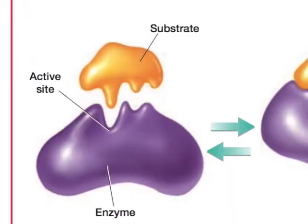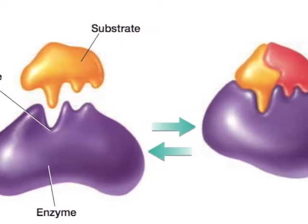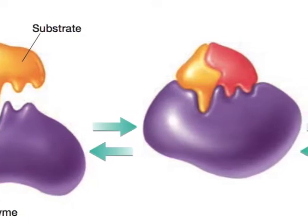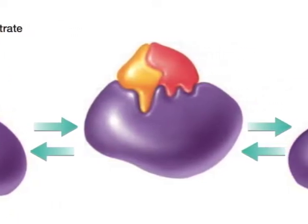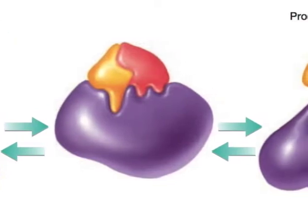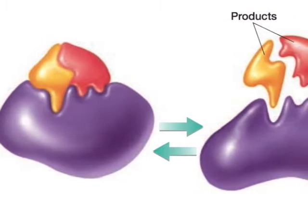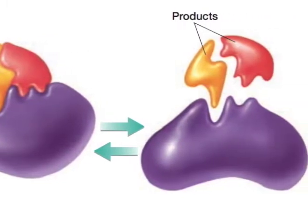This figure demonstrates the lock and key model of enzymes. As you can see, the substrate fits perfectly into the enzyme. The place where the substrate and the enzyme meet is called the active site. The enzyme changes shape slightly to accept the substrate, and then facilitates the reaction. Once the products are made, the enzyme releases the products and is free to catalyze, or help, more enzymatic reactions.